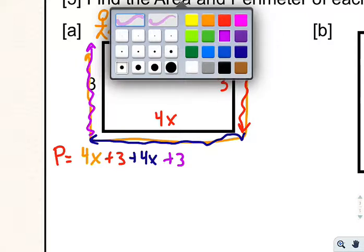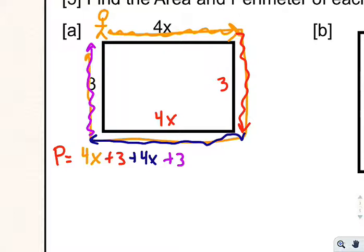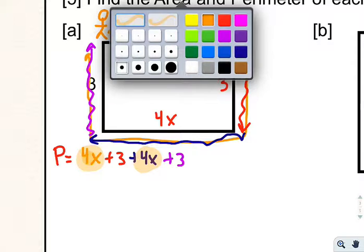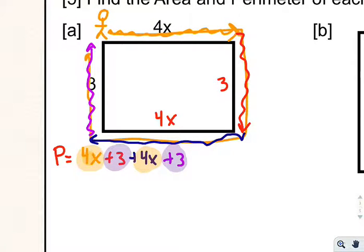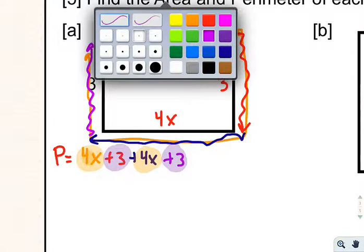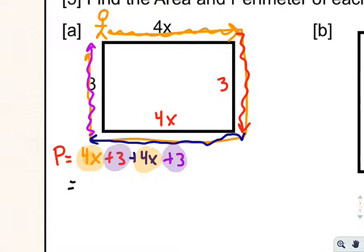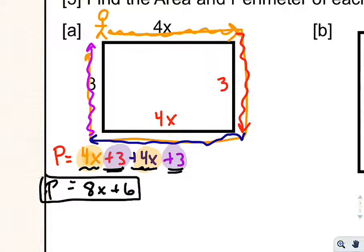This becomes an issue of combining like terms. So like terms are those that have the same variable or the same non-variable. So I'm going to go through and just highlight the ones that should go together. Those two should go together because they both have an x. These should go together because they're both numbers. When you combine these, I have 4x here and then I'm going to add 4 more x's. That's going to make it 8x. Here's a 3, here's 3 more. That'll be plus 6. So the perimeter in this case is represented by 8x plus 6.